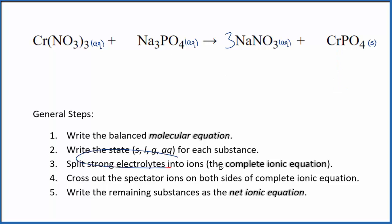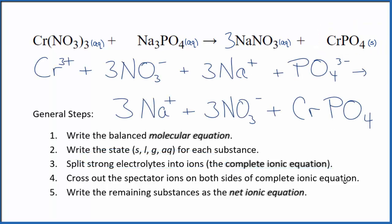Now that we have the states, let's split the strong electrolytes into their ions for the complete ionic equation. And we don't split solids apart in net ionic equations. So it looks like this. So this is the complete ionic equation, and again, we didn't split the solid here apart into ions in our net ionic equation.